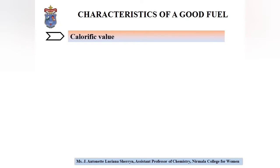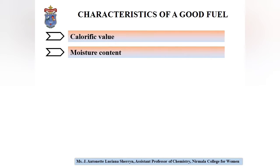A good fuel should have a high calorific value. The amount of heat liberated when a unit mass of fuel is burnt is known as the calorific value, so a good fuel should liberate a large amount of heat. A low moisture content is also required — the moisture content should be very low because moisture or water requires a larger amount of heat to raise its temperature and change from liquid to vapour, which takes time away from the combustion process.